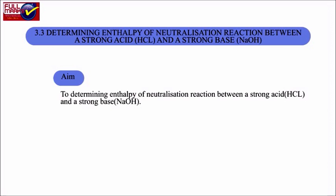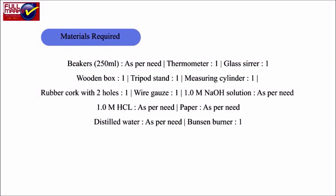Experiment 3.3: Determining the enthalpy of neutralization — reaction between a strong acid like HCl and a strong base NaOH. Aim: To determine the enthalpy of neutralization of HCl with NaOH. Materials Required: 250 ml beakers, thermometer calibrated to 0.10 degrees Celsius, glass stirrer, wooden box, tripod stand, measuring cylinder, wire gauze, 1.0 M NaOH solution, 1.0 M HCl, distilled water, paper, and Bunsen burner.